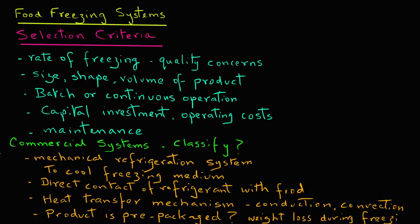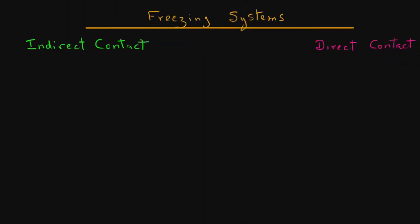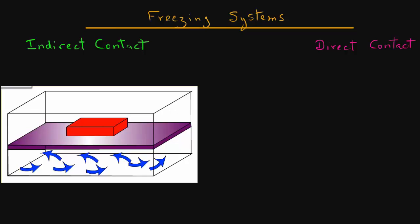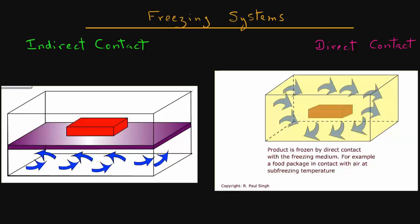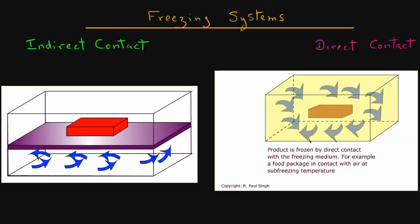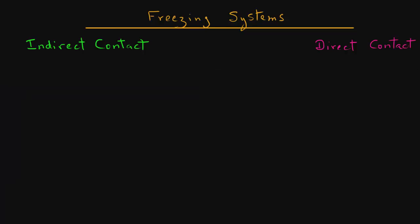So, based on these criteria, we can classify freezing systems in broad terms as indirect contact freezing systems and direct contact freezing systems. In case of indirect contact freezing systems, as we see in this animation, the product is separated from the freezing medium. In this case, for example, air, whereas in case of direct contact, the product is surrounded by the freezing medium. Let's look at some of the freezing systems under each category.